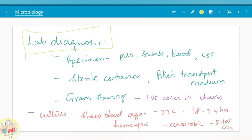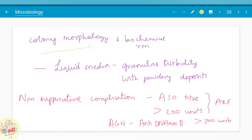The laboratory diagnosis of streptococcal is mainly by the specimen collected and cultured. The specimen is collected either by pus, swab, blood, or CSF depending on the site of infection using a sterile container, and if it needs to be transported, Pike's transport medium is used. Gram staining: it is a gram positive cocci which appears as chains. In culture, sheep blood agar shows hemolysis. It is anaerobic and 37 degrees Celsius with 5 to 10 percent carbon dioxide is the ideal condition to grow. Colony morphology and biochemical reactions we have already discussed. Liquid media shows granular turbidity with powdery deposits which is a point to remember. Regarding non-suppurative complications, ASO titer greater than 200 units is helpful in diagnosis of acute rheumatic fever, and in case of acute glomerulonephritis, anti-DNAse B greater than 300 units is helpful.